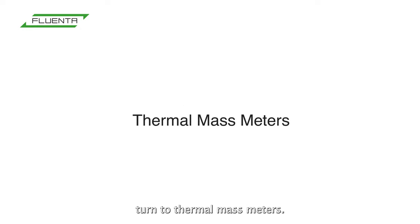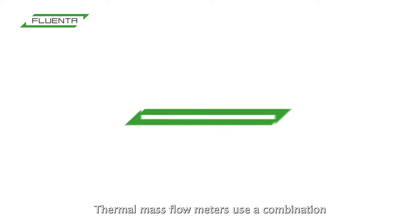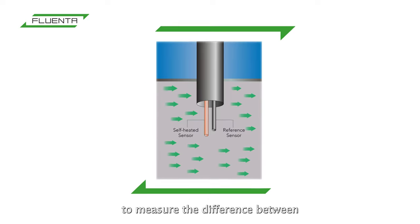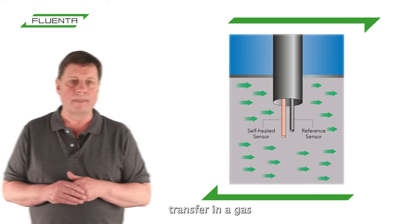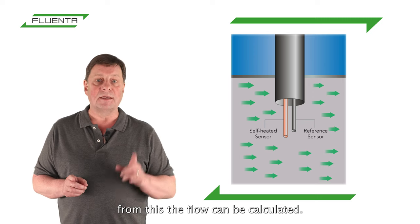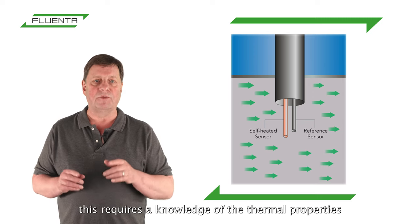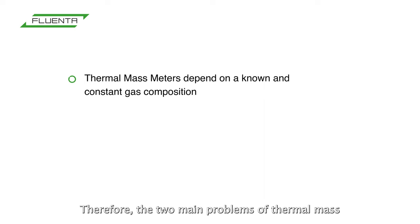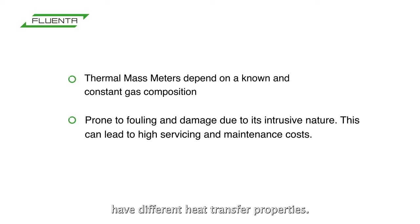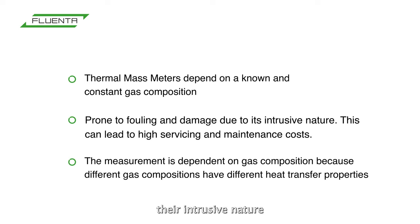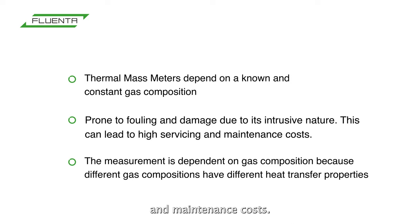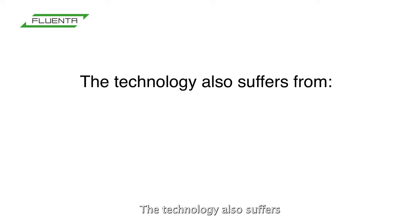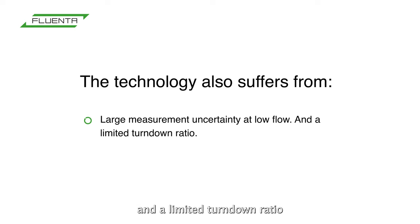Let's turn to thermal mass meters. Thermal mass flow meters use a combination of heated elements and temperature sensors to measure the difference between static and flowing heat transfer in a gas. From this, the flow can be calculated. However, this requires a knowledge of the thermal properties and density of the gas. The two main problems with thermal mass meters are: the measurement is dependent on the gas composition, because different gas compositions have different heat transfer properties; and their intrusive nature makes them vulnerable to fouling and damage, which can lead to high servicing and maintenance costs. The technology also suffers from a large measurement uncertainty at low flow and a limited turndown ratio.